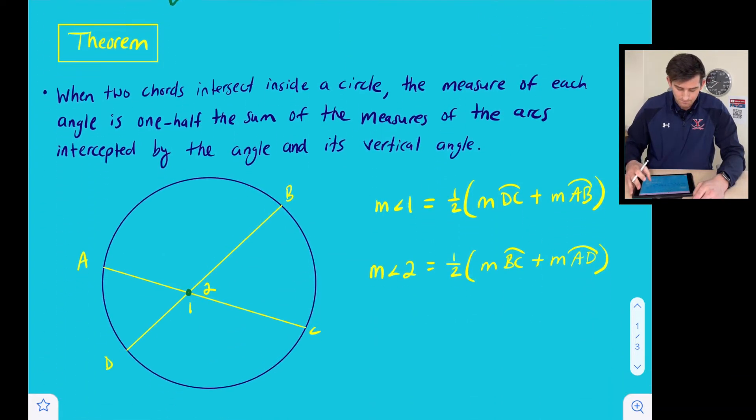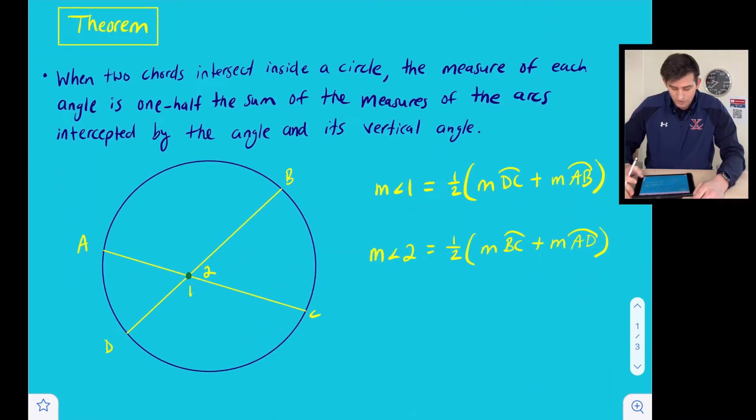So let's look at this theorem below. It states that when two chords intersect inside a circle, the measure of each angle is one half the sum of the measures of the arcs intercepted by the angle and its vertical angle.